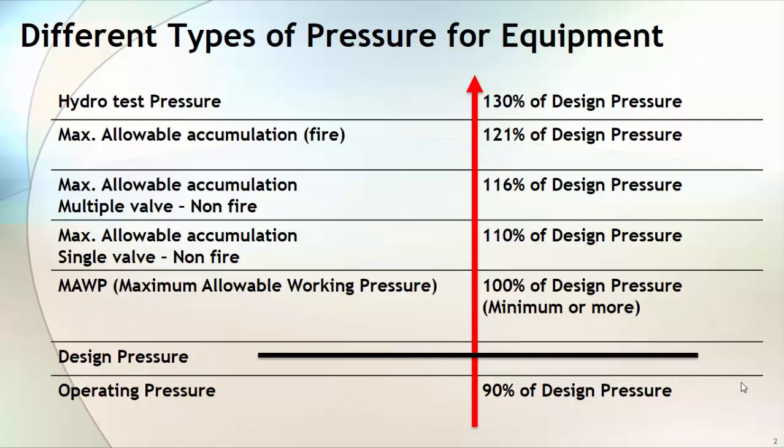Now it is very common that an 18 mm thickness plate can withstand more pressure than a 16.5 mm plate. So he will back-calculate using this 18 mm thickness plate to find what is the maximum pressure that this designed equipment can withstand. And this pressure will become your maximum allowable working pressure.